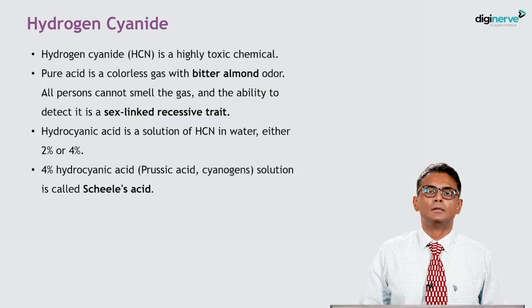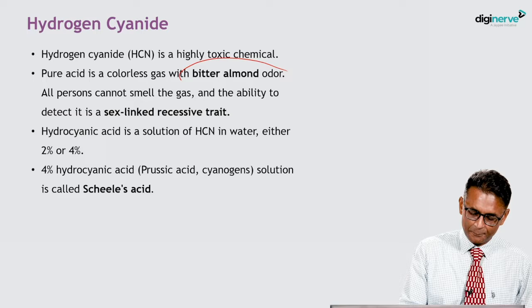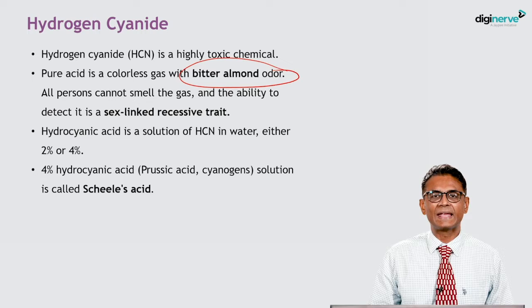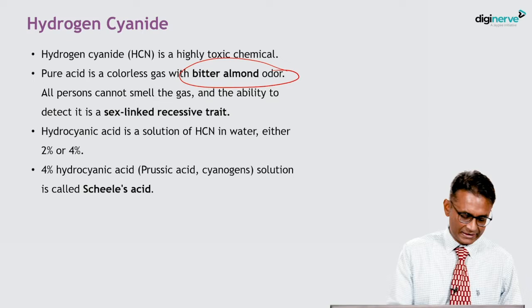Hydrogen cyanide (HCN) is a highly toxic chemical. Pure acid is a colorless gas with a bitter almond smell. Remember, it has a bitter almond odor. Not all persons can smell this gas, and the ability to detect it is a sex-linked recessive trait. Hydrocyanic acid is a solution of HCN in water, either 2% or 4%.